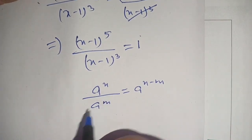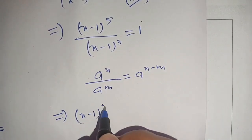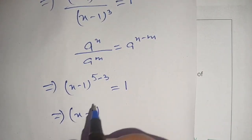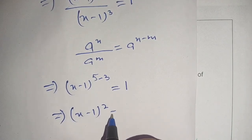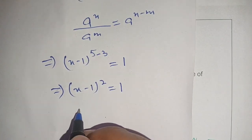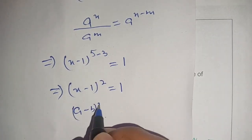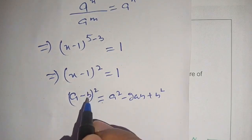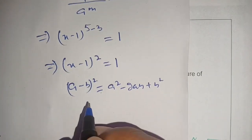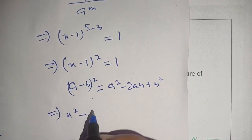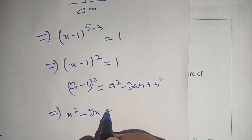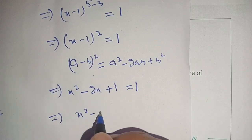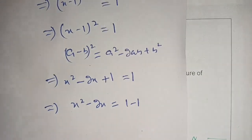So (x - 1) raised to power 2 equals 1. The left hand side is in the form (a - b)² = a² - 2ab + b². Here a is x and b is 1. Applying this identity we get x squared minus 2x plus 1 equals 1.